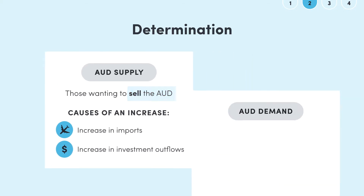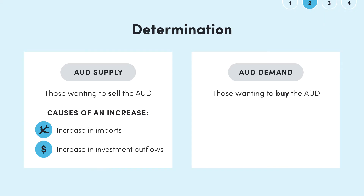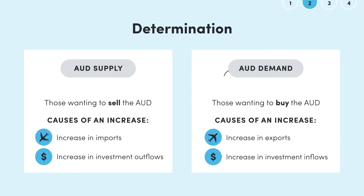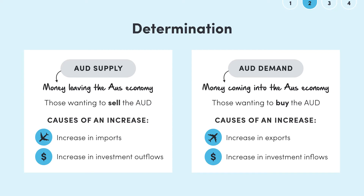Australian dollar demand refers to those who want to buy Australian dollars, so an increase in exports and an increase in investment inflows both represent an increase in Australian dollar demand. This is because those wishing to buy Australian products or invest here must buy Australian dollars to do so. It might be helpful to think of Australian dollar demand as money coming into the Australian economy and Australian dollar supply as money leaving the Australian economy.